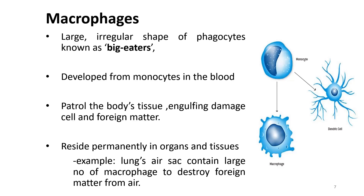Macrophages are large, irregularly shaped phagocytes, also known as the 'big eaters.' Macrophages develop from monocytes in the blood and patrol through body tissues, engulfing damaged cells and foreign matter. Macrophages reside permanently in organs and tissues. For example, the lung air sacs contain large numbers of macrophages to destroy foreign matter from the air.